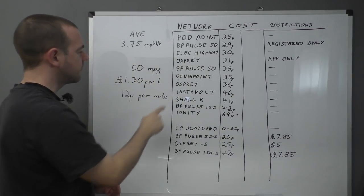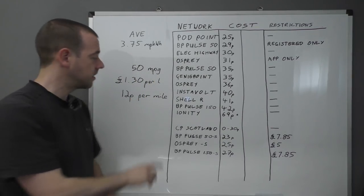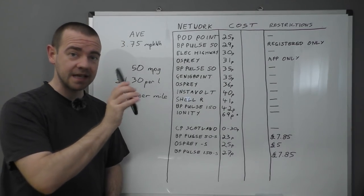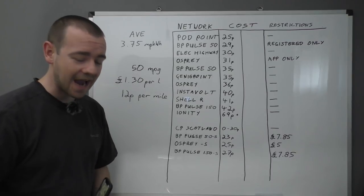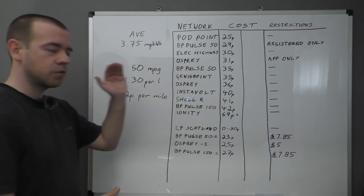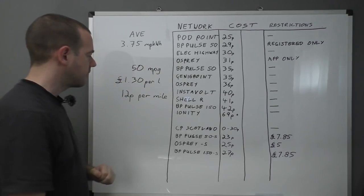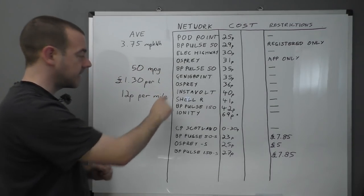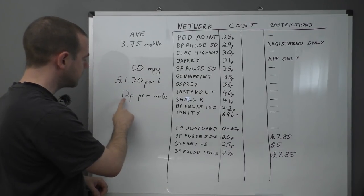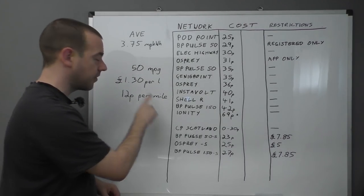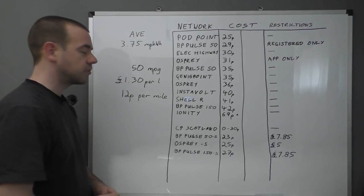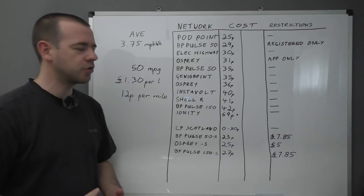So then we can figure out the pence per mile. So, at £1.30 per litre, which, according to today's RAC fuel watch, is the average price, well, average of petrol and diesel anyway. I think it's £129, £131, respectively. So, £1.30 per litre is today's current average price in this country, which gives you 12 pence per mile. That's how much it costs you in fuel to drive a petrol or diesel car, basically a combustion engine vehicle.